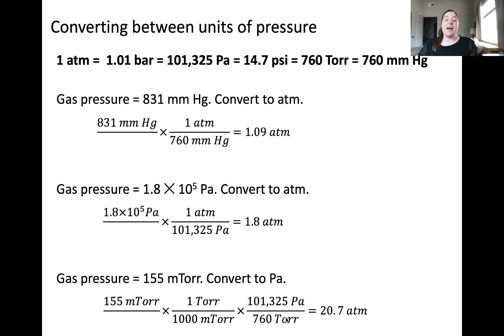To go from torr to pascal, we can then use the applied conversion factor. 760 torr is equal to 101,325 pascals. Using the dimensional analysis, we get an answer of 20.7 atmospheres.